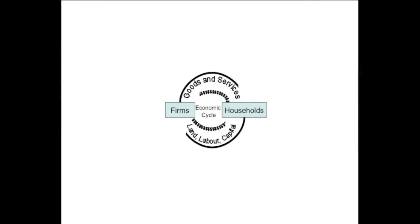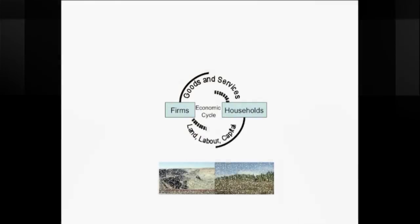Let's start with a picture of an economy. Here you can see the most simple picture of an economy that we present to students of economics. It shows the economy divided between firms and households. The firms provide the goods and services that households buy, and the households are the supplier of land, labour, and capital, which they ultimately own and sell to the firms. We talk about the economic cycle, showing the goods and services going in one direction and the money going in the other direction. But the problem with this representation is that it's completely absent of any connection to the environment.